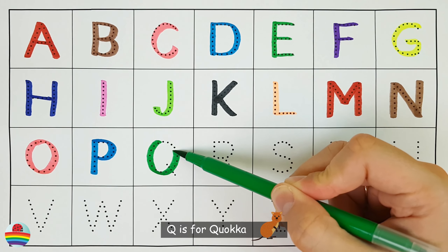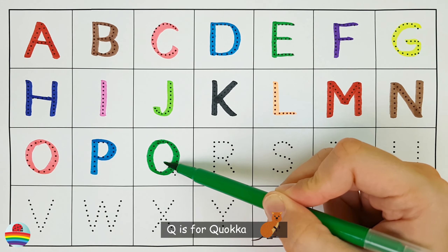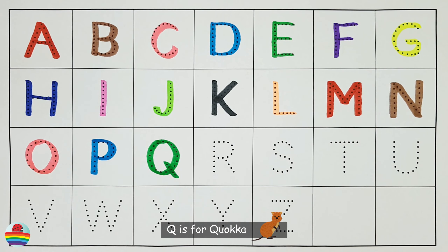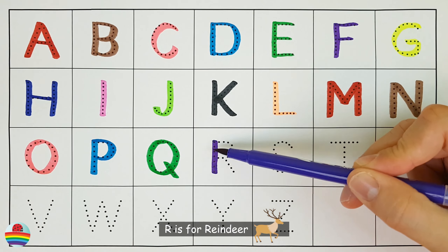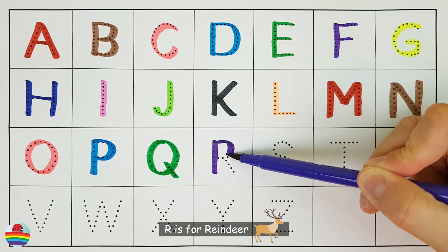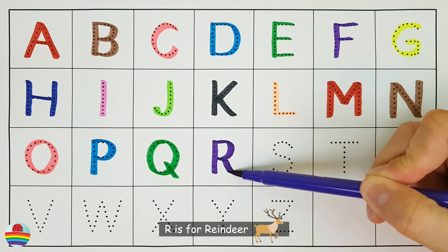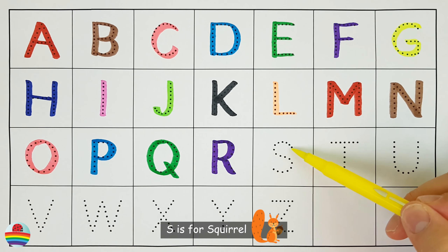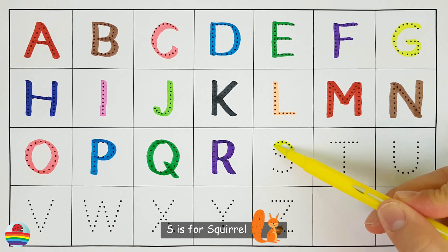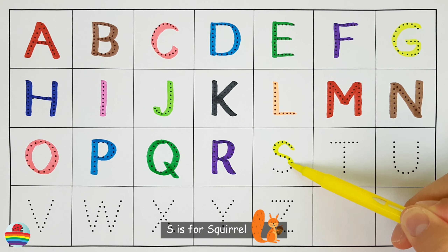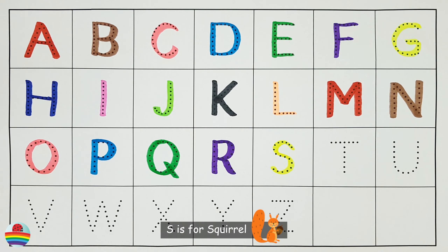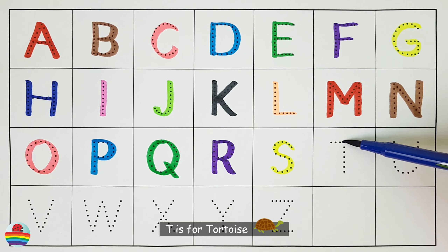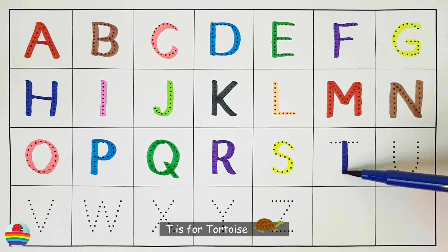Q is for quokka. R is for reindeer. S is for squirrel. T is for tortoise.